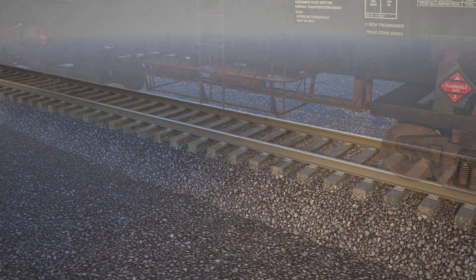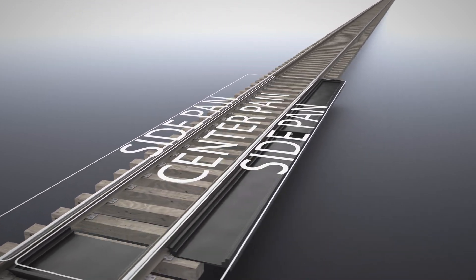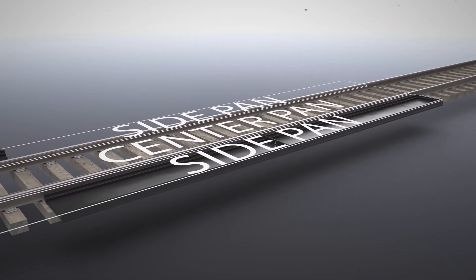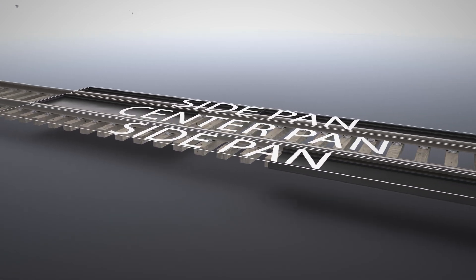The modular system has 20-foot pans that can be used in the center and or the sides of the railroad ties. For this video, we will assume the most popular configuration of center pans and side pans on both sides.